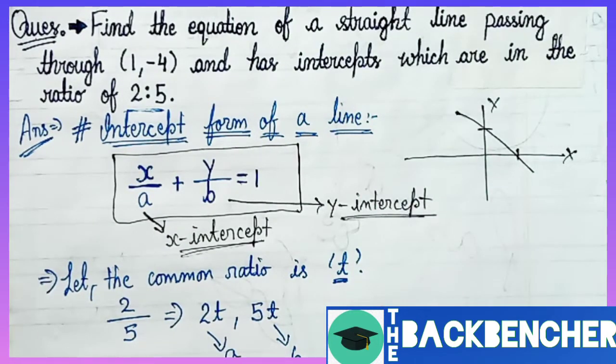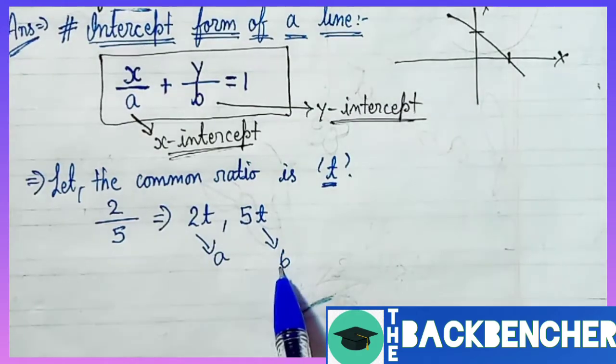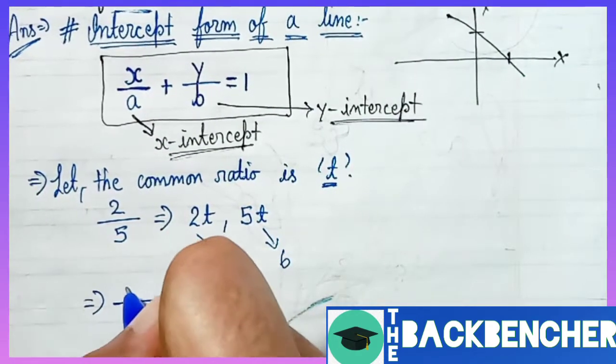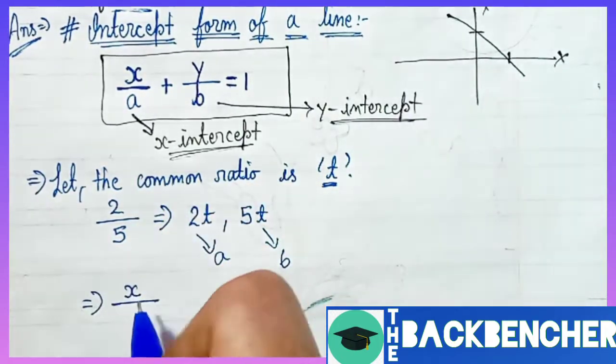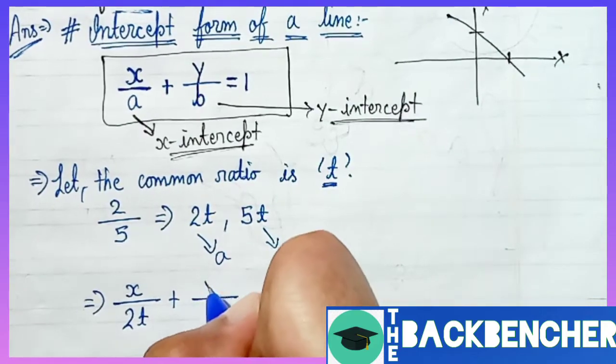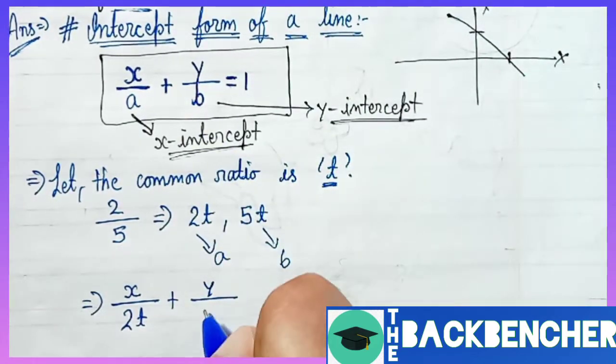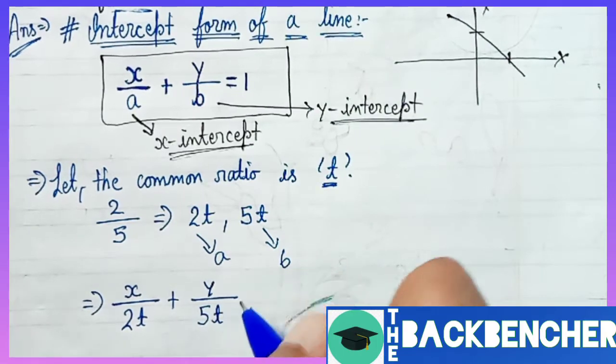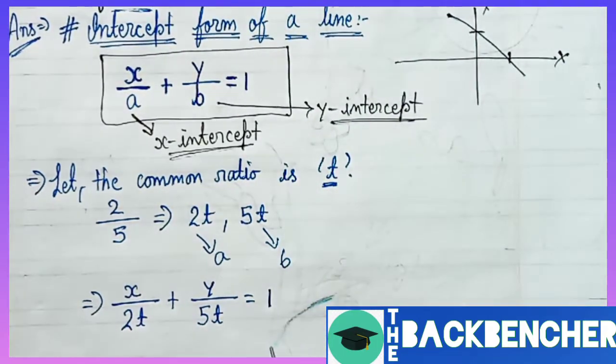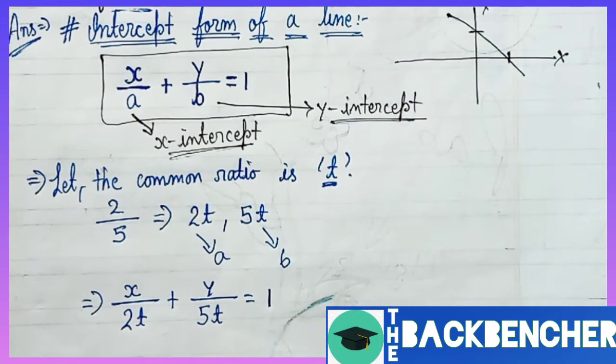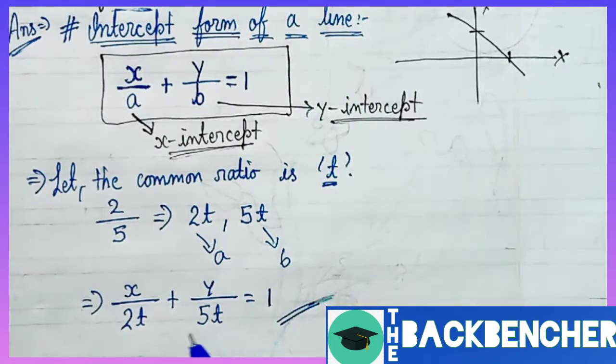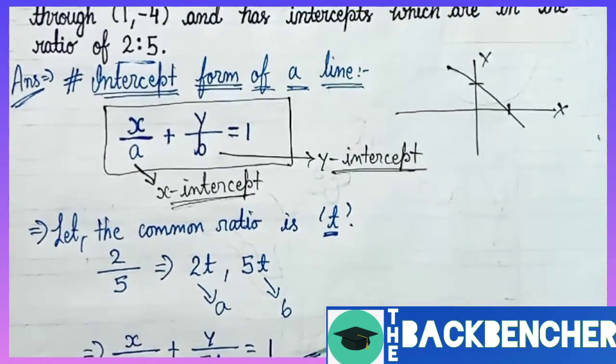In the intercept form equation x/a + y/b = 1, if we have found the values of a and b, now we will put these values in the general intercept form. We've written a = 2t, then x/(2t) + y/b, and b = 5t. So x/(2t) + y/(5t) = 1. We've replaced a and b with 2t and 5t because the ratio between them is 2:5, and we assumed common ratio is t.